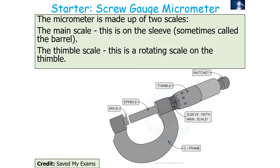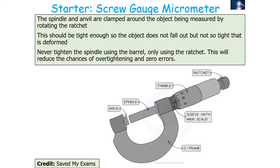A micrometer is made up of two scales: the main scale on the sleeve or barrel, and the thimble scale, which is the rotating scale on the thimble. When measuring something like the diameter of a wire, you'll typically only need the thimble scale. The spindle and anvil are clamped around the object being measured by rotating the ratchet of the screw gauge micrometer.